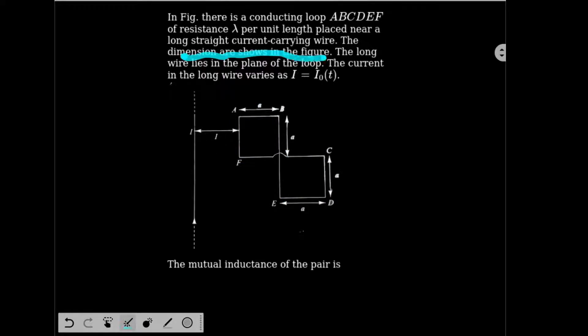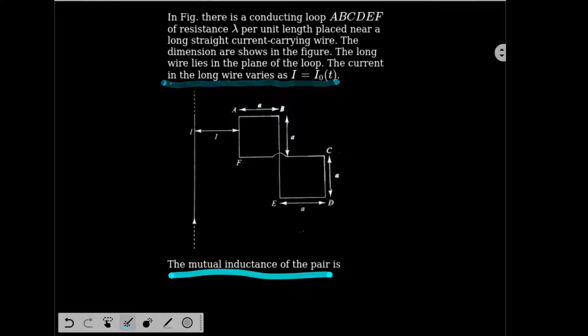The dimensions are shown in the figure, the long wire lies in the plane of the loop. The current in the long wire varies as I equal to I0t. The mutual inductance of the pair is what? So how do we solve this? It's very easy.